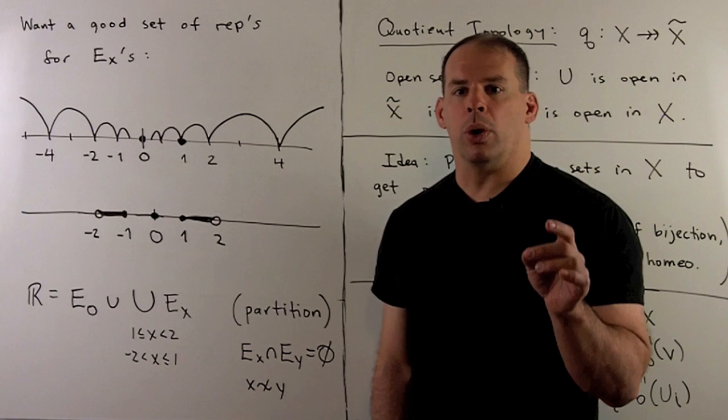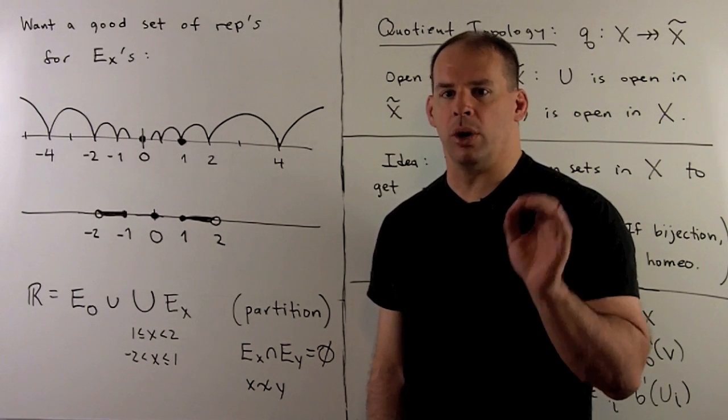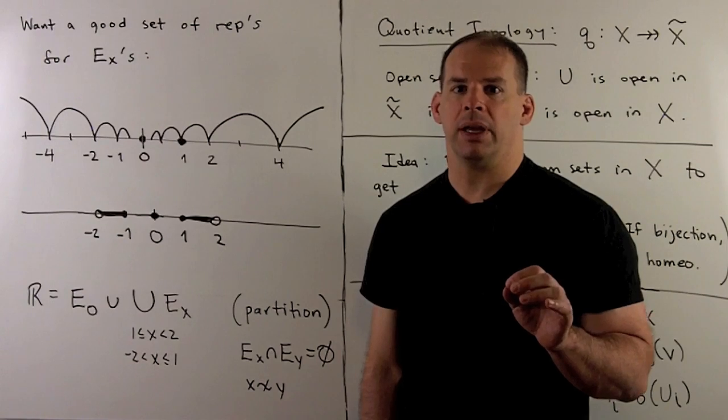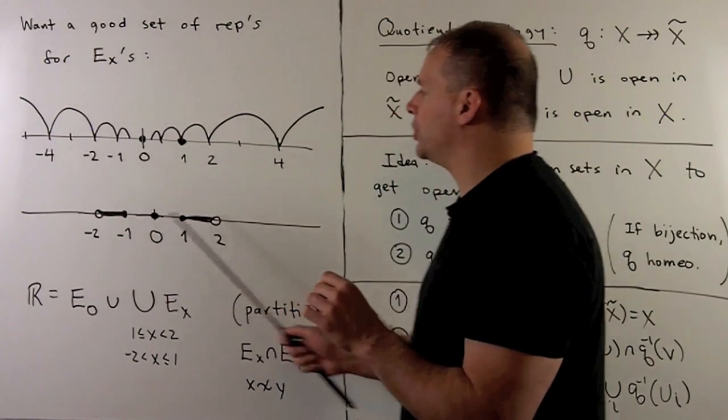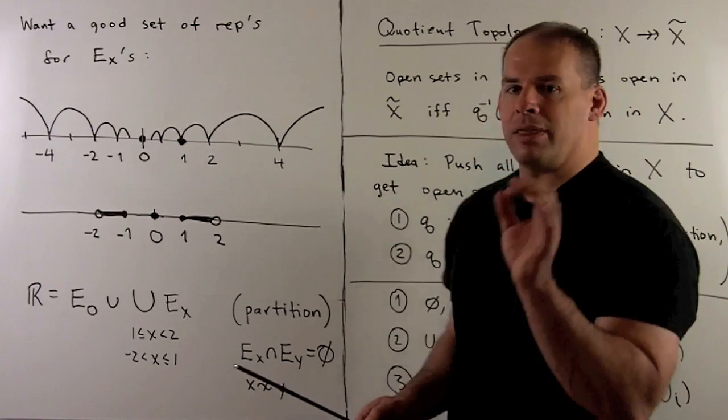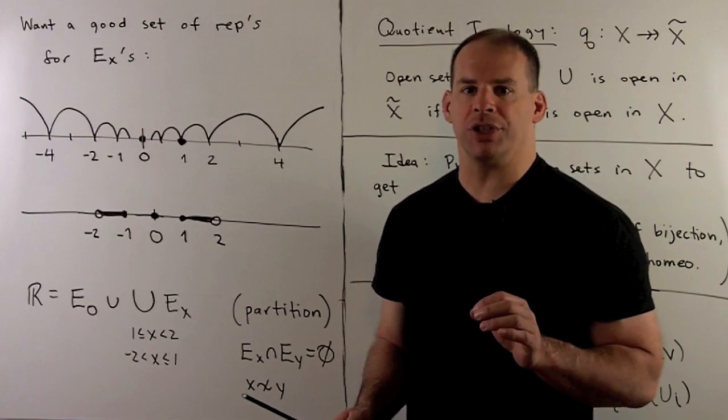When we work with quotient spaces, it's important that we pick good representatives for our equivalence classes. If we consider the equivalence relation as giving us a partition of our space, the real line, then those representatives are going to give us an index for the sets that occur in the partition.